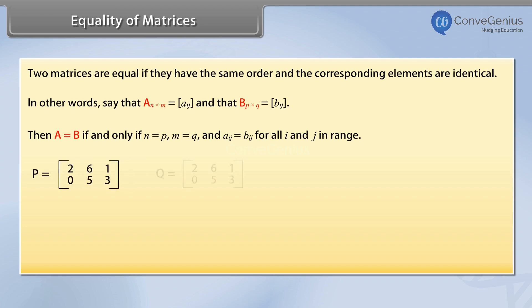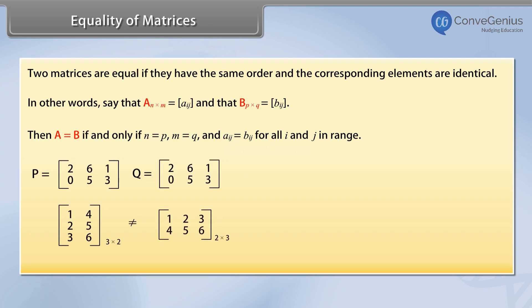Matrices P and Q are equal. Here are two matrices which are not equal, even though they have the same elements.